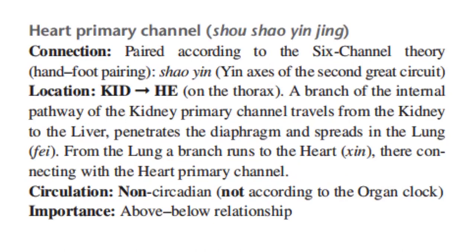The second connection is with the heart primary channel. This connection is paired according to the six-channel theory of the hand-foot pairing, the xiaoyin or the yin axis of the second great circuit. Its location is between the kidney and the heart on the thorax. A branch of the internal pathway travels from the kidney to the liver, penetrates the diaphragm, and spreads in the lung. From the lung, a branch runs to the heart, connecting with the heart primary channel. Its circulation follows a non-circadian cycle, not according to the organ clock. This connection shows the above and below relationship.